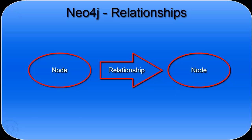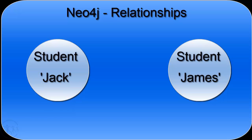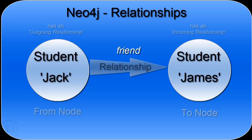We're going to go over a little bit of theory now, and then in the next tutorial we're going to look at the theory in practice using the Cypher language. We've got two student nodes here, and in our social network we want to create a relationship between Jack and James — a relationship of type FRIEND. So Jack is a friend of James, and we model that with a relationship of type FRIEND.